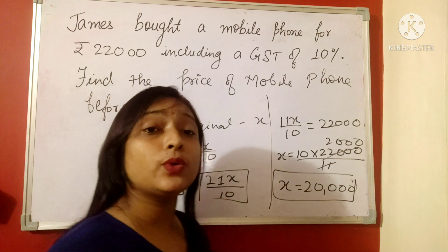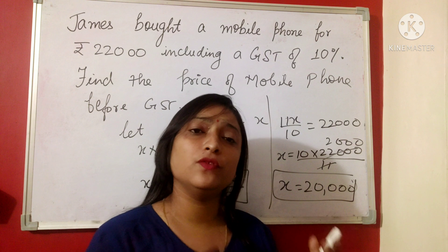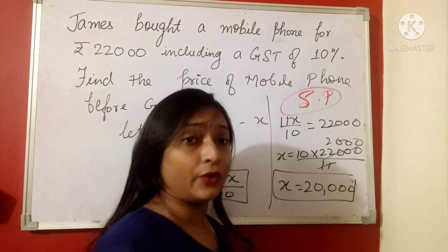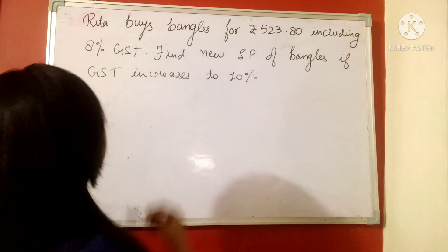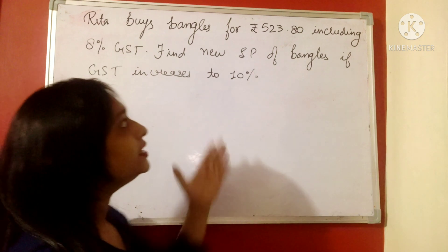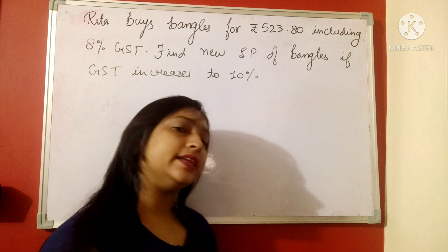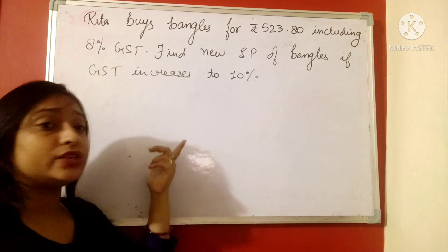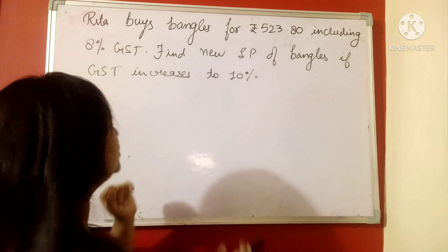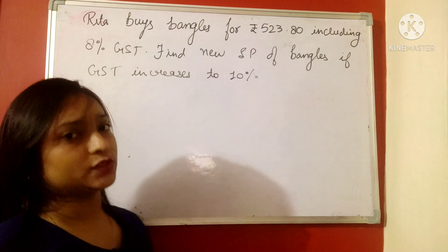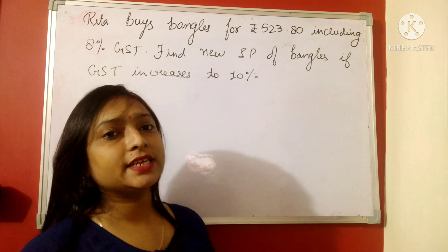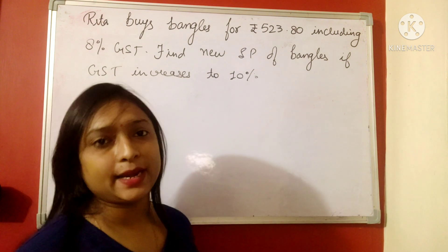I would like to add one thing here: GST is always and always applied on the selling price. The next question says: Rita buys bangles for rupees 523.80 including GST of 8 percent. We need to find the new selling price of the bangles if the GST increases to 10 percent.